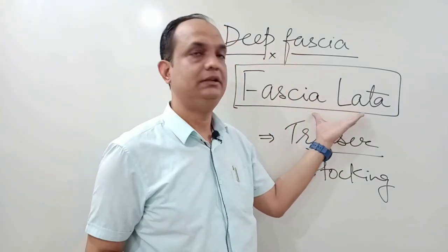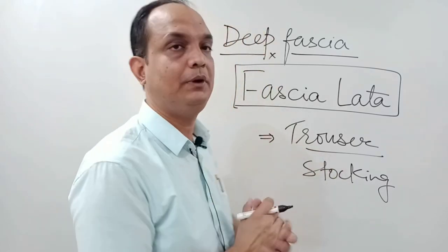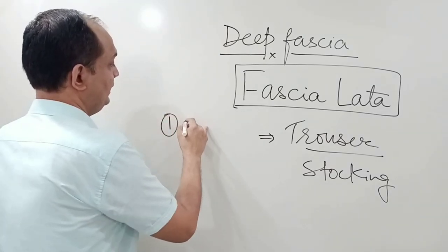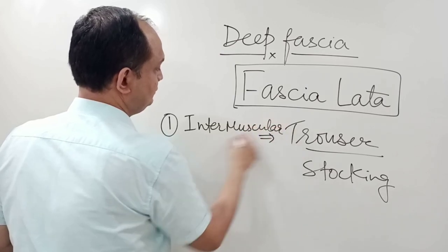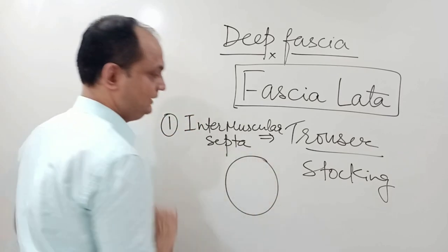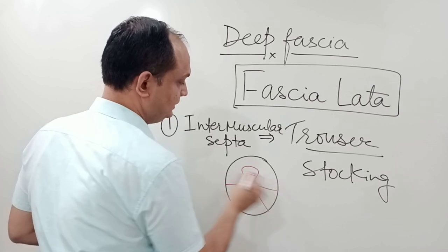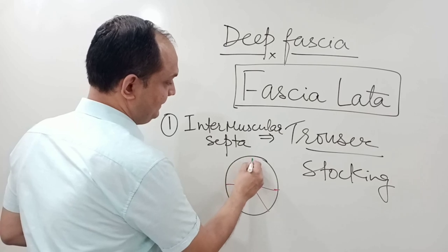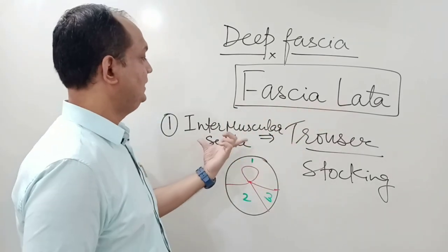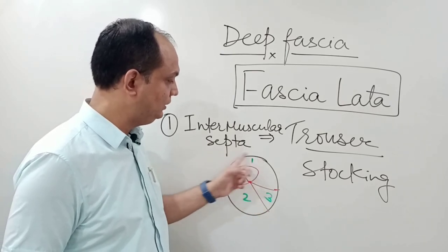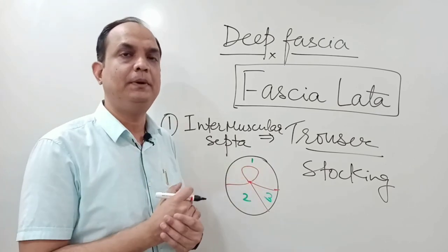What is the main function of the fascia of thigh? One important function is that it provides intermuscular septa. These intermuscular septa, along with the femur, divide the circumference of the thigh into three compartments.